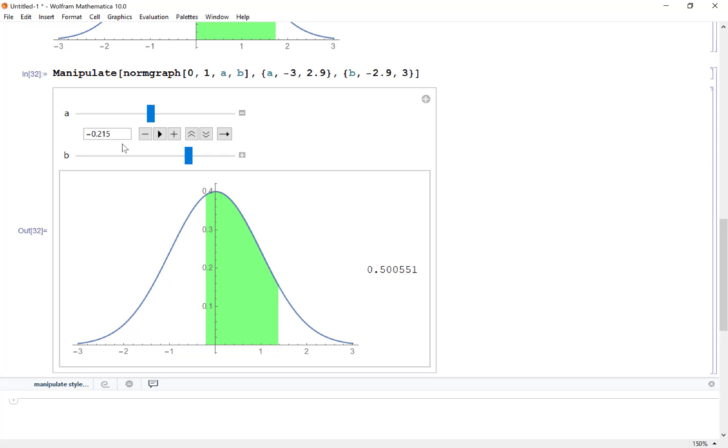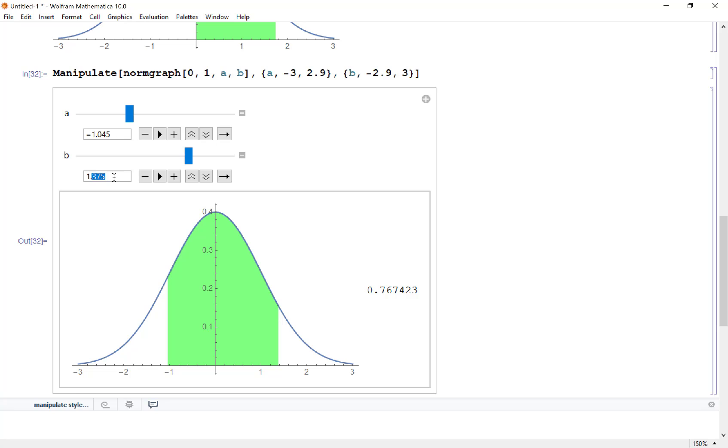All right, so if I had a question that said I needed a probability between negative 0.145 up to 2.014, I just type it in and then I get a probability of 0.829984 which would be about 83 percent.